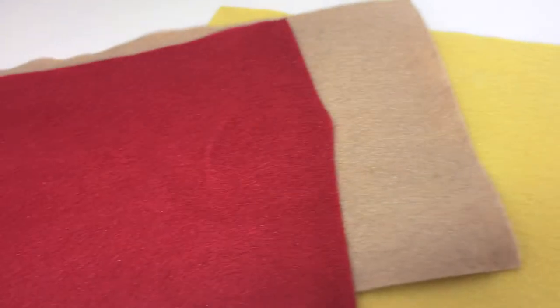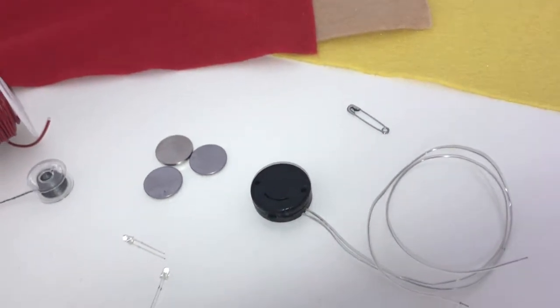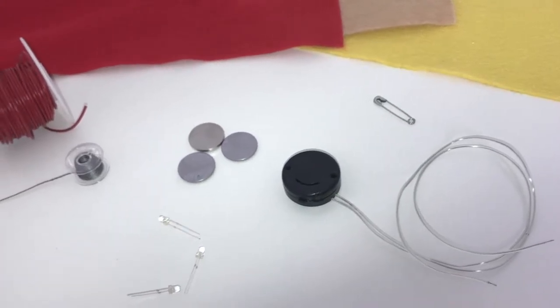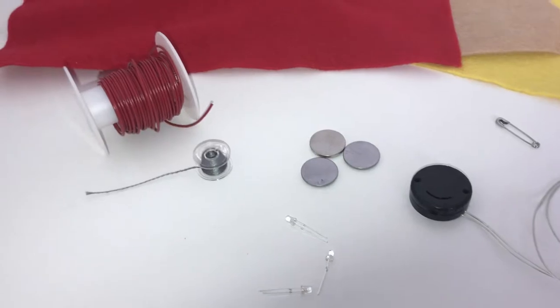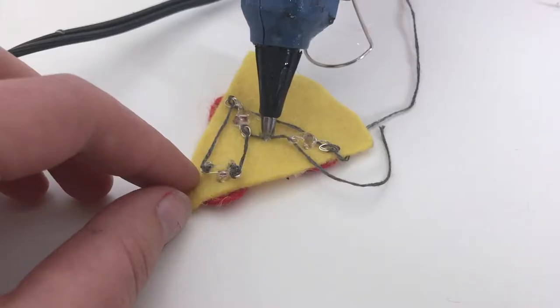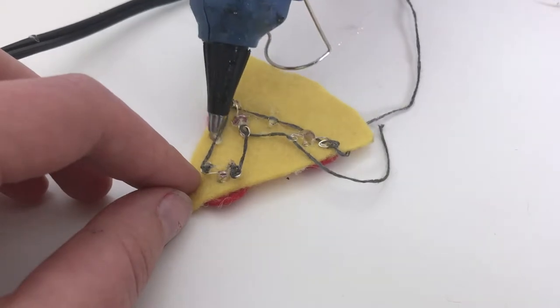For this project you will need coloured felt: brown, yellow, and red to make a pizza. You will also need a coin cell battery, three red LEDs, and conductive thread. You can use a battery holder or a pin backing but this is optional. You will also need scissors, small pliers, sewing needles, and glue. A glue gun is best but fabric glue will also work.